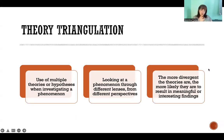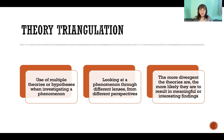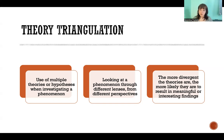Theory triangulation is where we use multiple theories or hypotheses when investigating a phenomenon, so that you're looking at that phenomenon through lots of different lenses and perspectives. You might be asking different questions depending on the theory you're applying. The more divergent each of these theories are, the more likely you are to see totally different views and ideas and come up with completely different and meaningful findings. Ideally you don't want to use theories that all agree and complement one another — you want totally different theories so that you get the broadest, most big-picture view, with each theory stimulating different ideas and approaches.